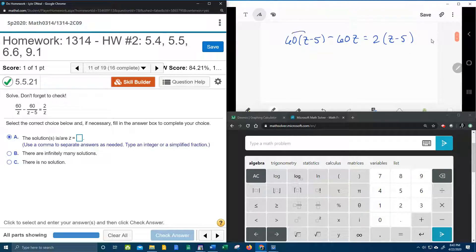Alright, so here we go, distributing the 60 and the 2. That's going to give me 60z minus 300, 5 times 60 is 300, minus 60z equals 2z minus 10. 2 times 5 is 10.